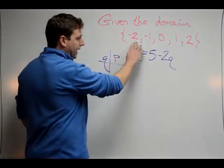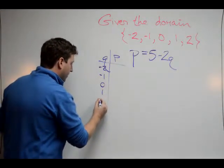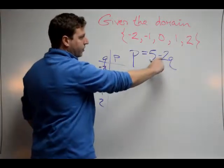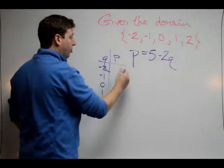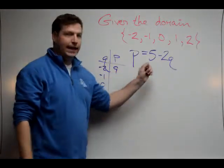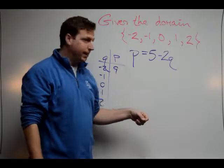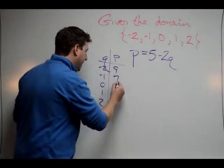I'm going to start with negative 2 and plug it in for Q. When I plug in negative 2 times negative 2, I get positive 4 plus 5, which is 9. When I plug in negative 1, the two negatives make it positive, so I get positive 2 plus 5, which equals 7.